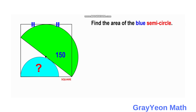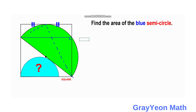First, we need to draw a line from this point to the intersection of the green semicircle and the square to the right — and this is actually a 90-degree angle. Next, we draw another line from this point to this point of the square, and another line from that point to this point. This angle is actually 90 degrees because it is opposite the diameter.